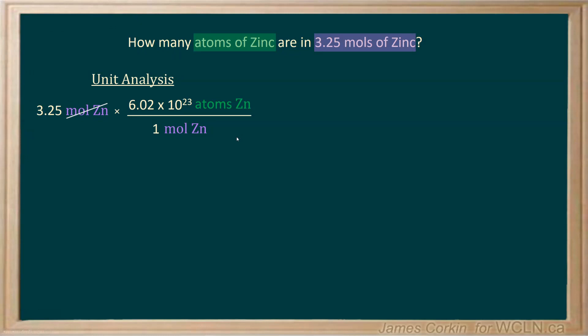Remember, you should show your cancellation. I'm going to cross out these moles of zinc. They cancel out and we're left with atoms of zinc, which is what the question asks us to find.